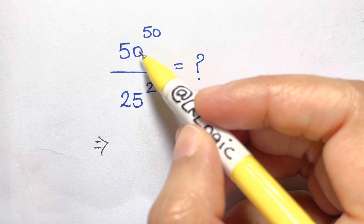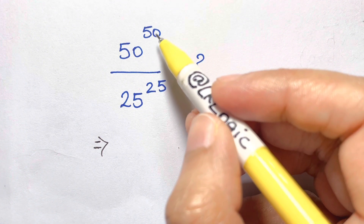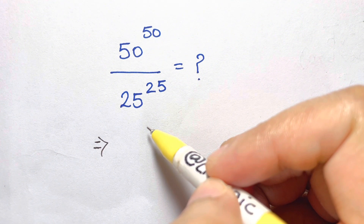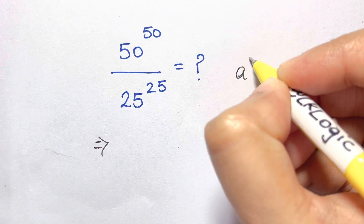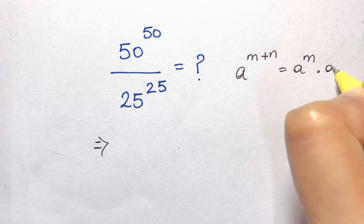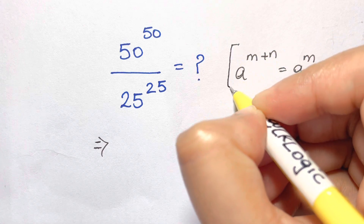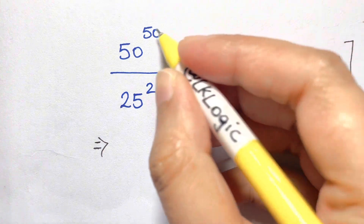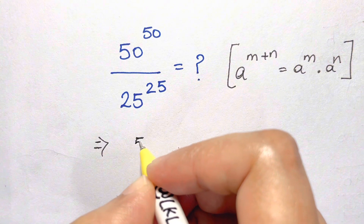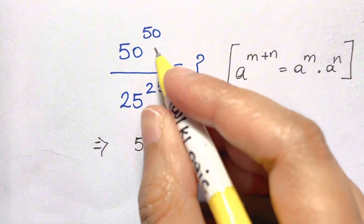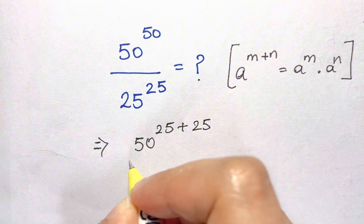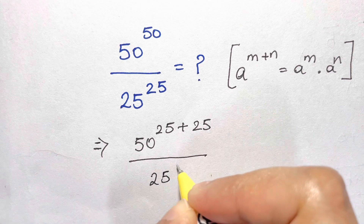Now 50 can be written in terms of 25 — two 25s make 50. We are going to apply the law a^(m+n) = a^m · a^n. So let's split 50 in terms of 25: we write the exponent as 25 plus 25, giving us 50^(25+25) over 25^25.